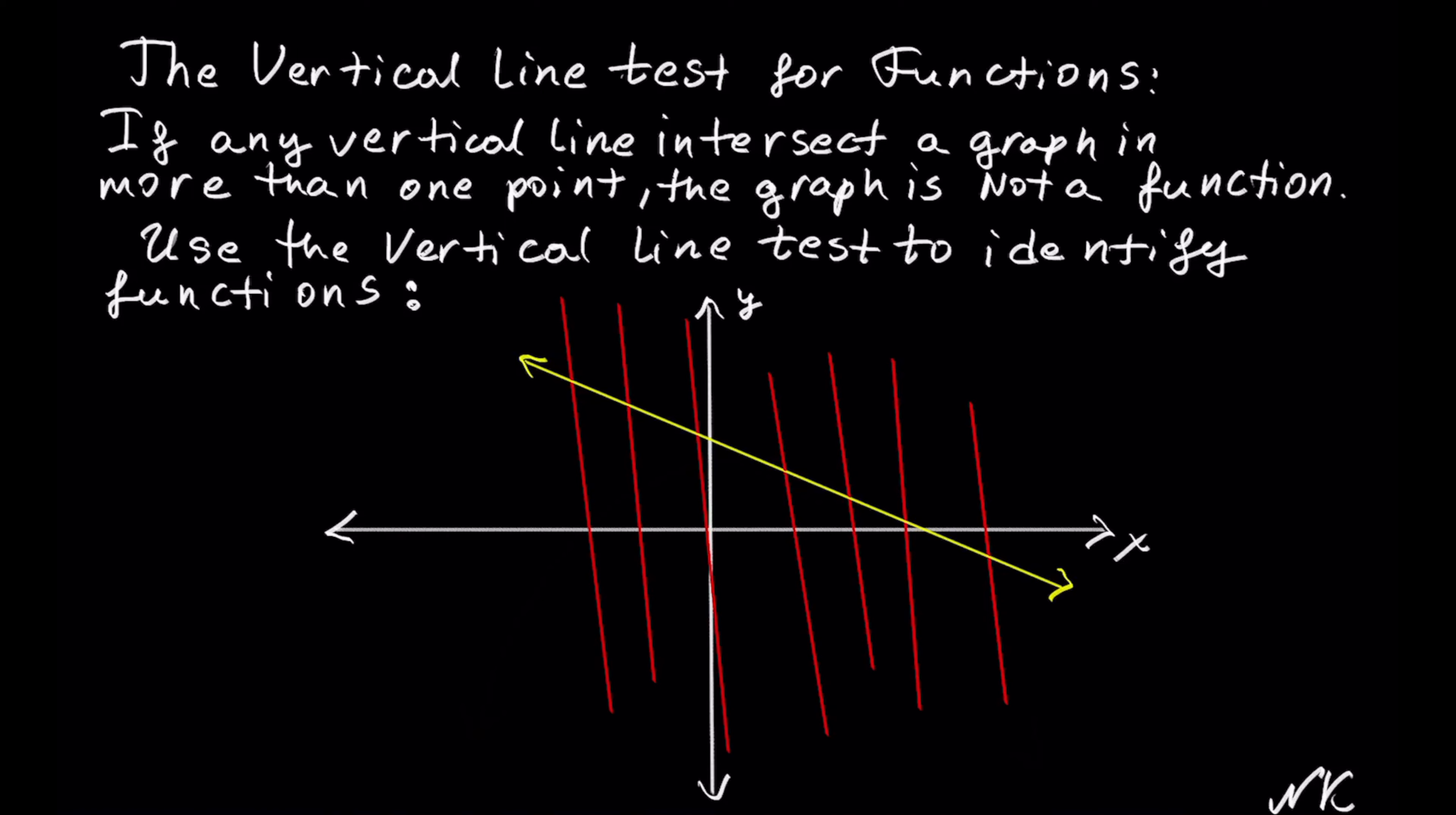As you see, this line can only be intersected once with the vertical line test. So a line is a function.